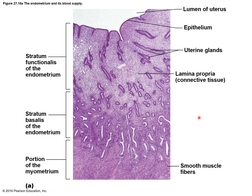On this histological slide focusing on the endometrium, you can see uterine glands and epithelium on the surface. The stratum functionalis is the layer shed during menstruation, and the stratum basalis forms the new stratum functionalis afterward.